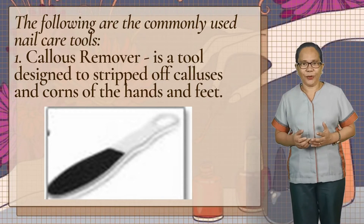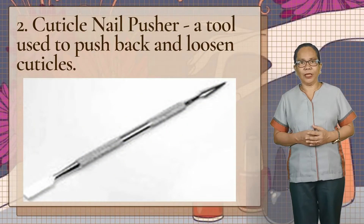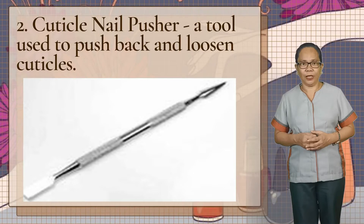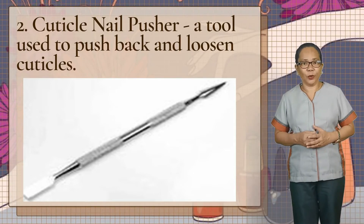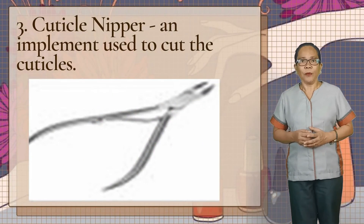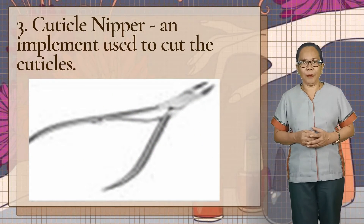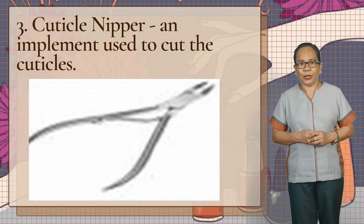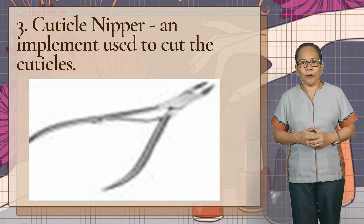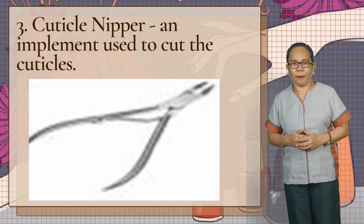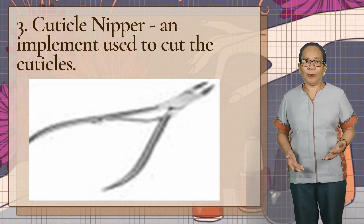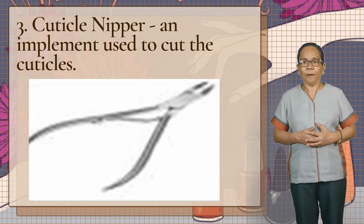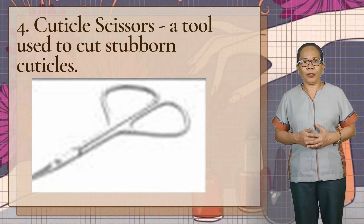Next we have the cuticle nail pusher, a tool used to push back and loosen cuticles. I know that we have all seen this tool or implement. Next we have the cuticle nipper, an implement used to cut the cuticles. We have to be very careful in using this, kasi kapag bagong hasa o bagong pili, matalim siya — pag hindi tayo maingat, pwedeng masugat ang ating kuko o daliri.